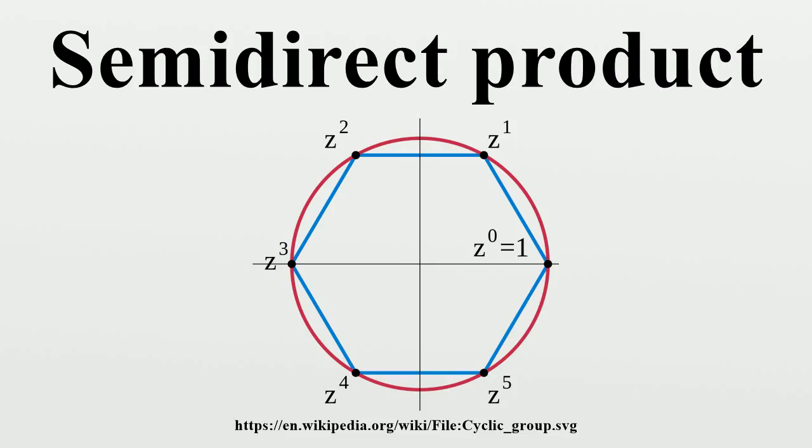To see this, let φ be the trivial homomorphism, i.e., sending every element of H to the identity automorphism of N. Then the result is the direct product.